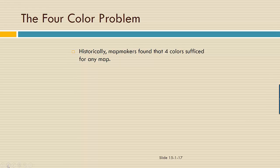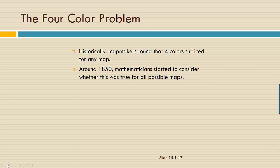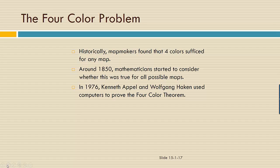Historically, map makers found that four colors sufficed for any map. And mathematicians started to wonder around 1850, is this something that holds true for all maps? And in 1976, Kenneth Appel and Wolfgang Haken used computers to prove that in fact it is true. Any map can be colored using only four colors or less, such that no two adjacent regions are the same color.